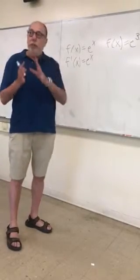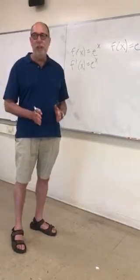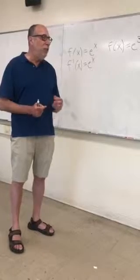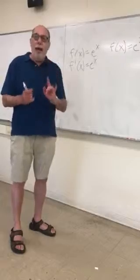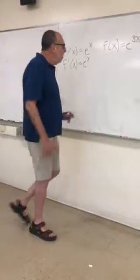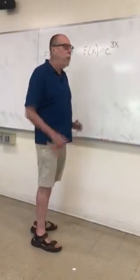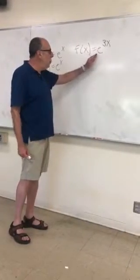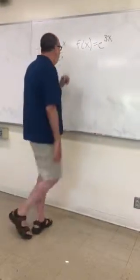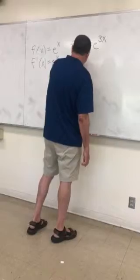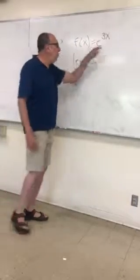Usually a textbook will explain the chain rule using function composition, and it gets a little complicated trying to think of it in those terms. The way I like to look at it is we're going to look at levels of functions. So let's look at this function — what is the main thing that we are doing in this function? We're taking e to a power. So level 1, that's going to be the main purpose of the function: e to a power.